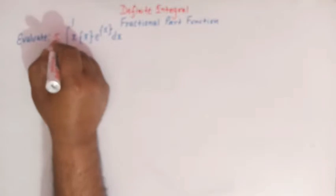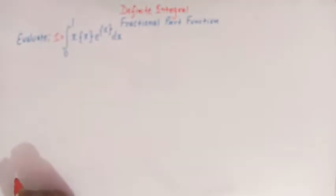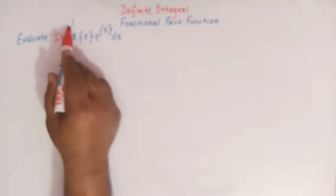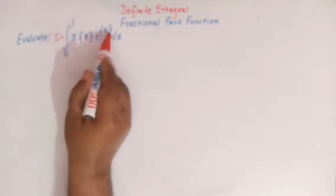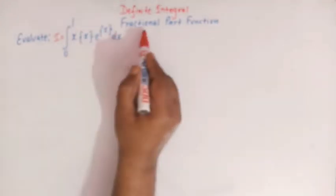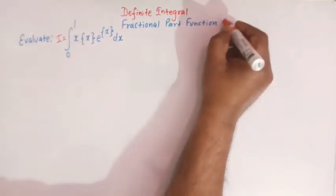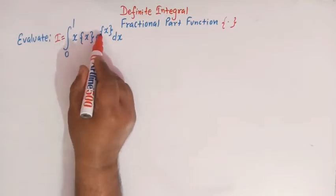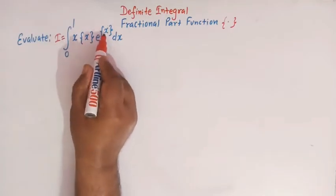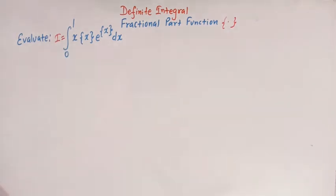Let us first call this integral as I. We see that this is the integral from 0 to 1, where the curly brackets denote the fractional part function. So here we have the fractional part of x and e raised to the fractional part of x. This is a very important elementary and conceptual problem from definite integrals of fractional part function.